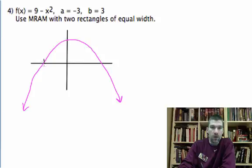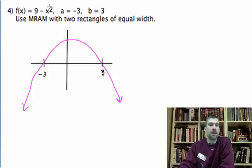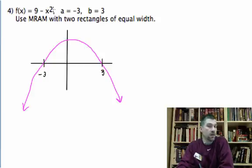So we're going to go from negative 3 to 3. And I know that this crosses the x-axis at 3 because if I put a 3 in here, 9 minus 3 squared is 0. 9 minus negative 3 squared, both of those are going to be 0.